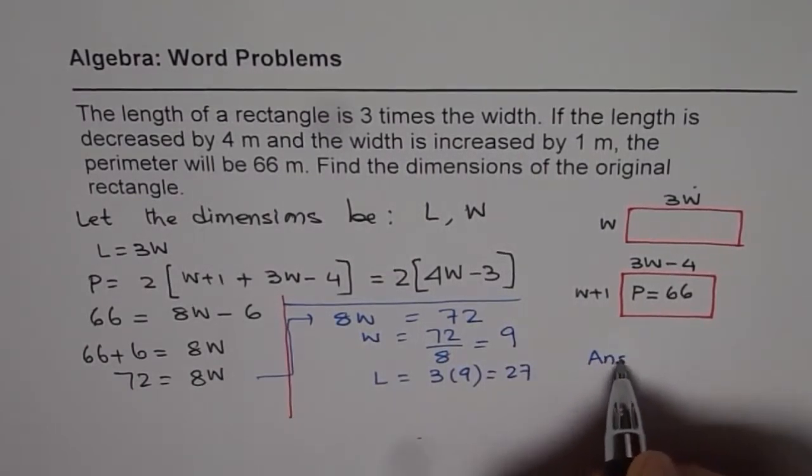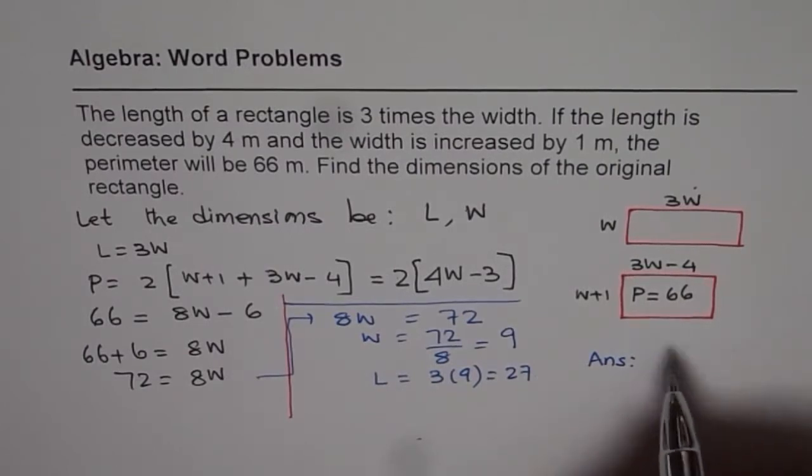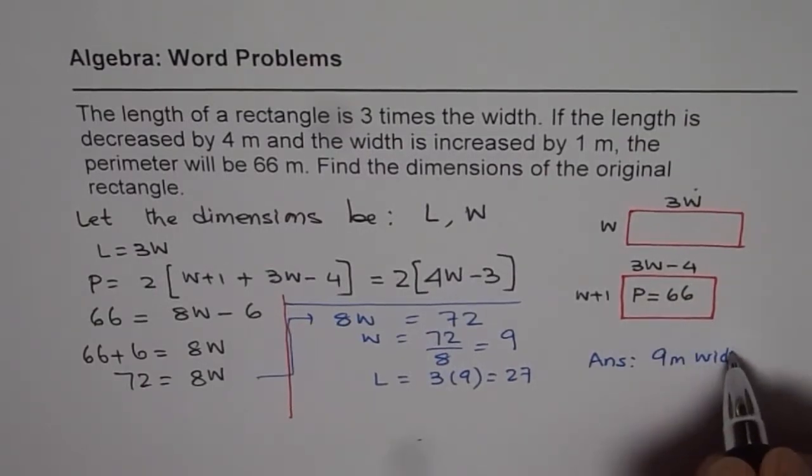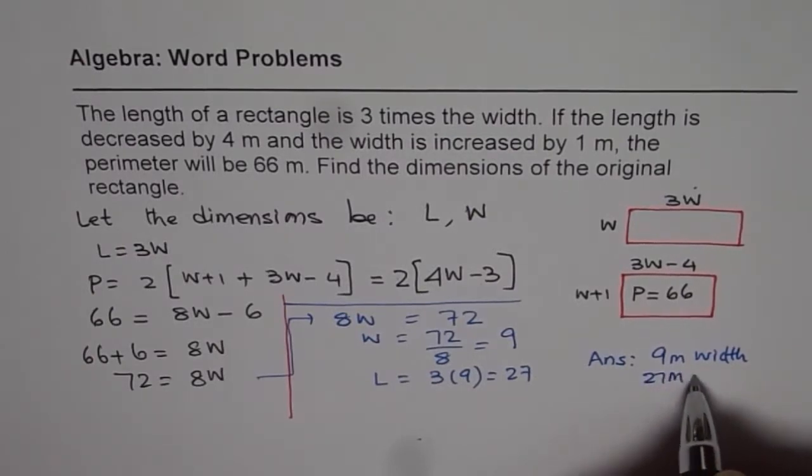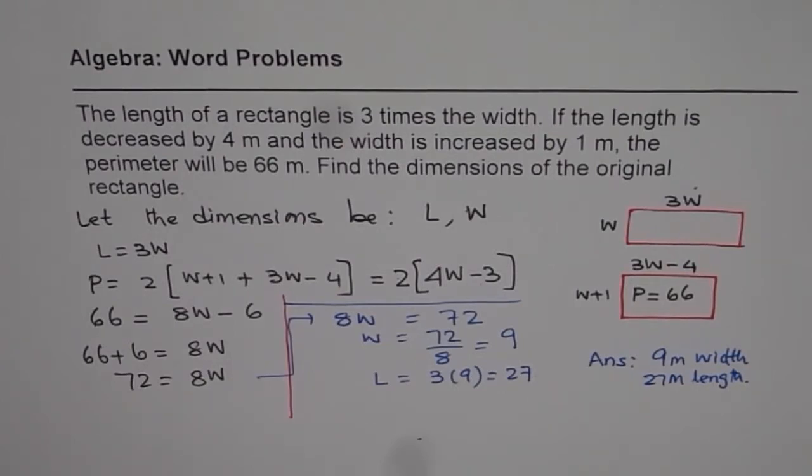So we get our answer. The rectangle is, units are meters. So we can write this as 9 meters is the width, and 27 meters is the length of the original rectangle. Thank you.